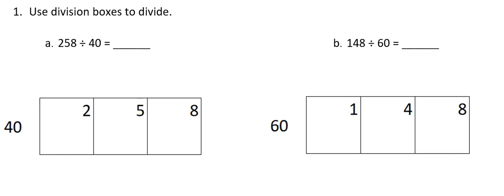I'll start by asking myself how many groups of 40 can I pull out of 2. Well I can't pull any groups of 40 out of 2, so that means I'm going to move my 2 over to the next box. The next question is how many groups of 40 can I pull out of 25? Well again I can't pull any groups of 40 out of 25, so I will move the 25 over to the next box. Here I'll ask how many groups of 40 I can pull out of 258.